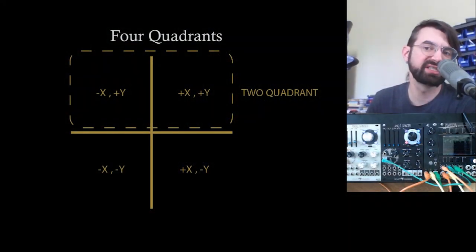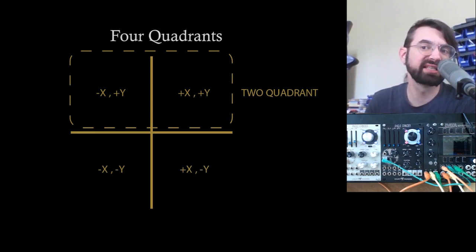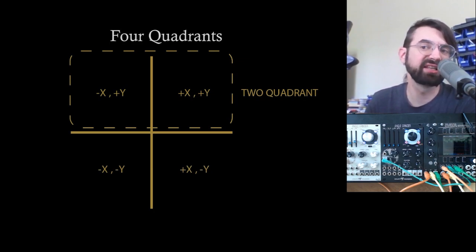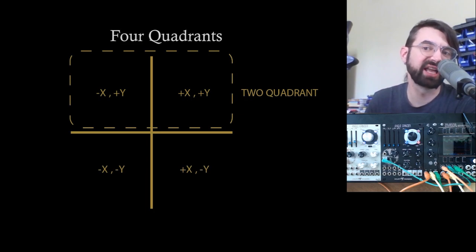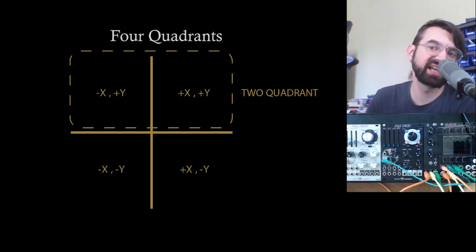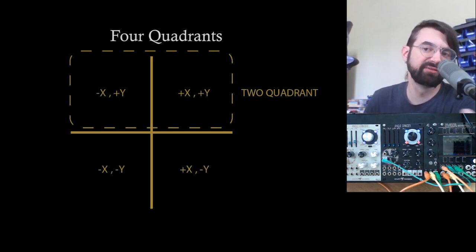A standard VCA is a two-quadrant multiplier — it multiplies two signals, x and y, against each other. The audio input can be both negative and positive, and the CV input can only be positive. One critical thing: if either one of these signals is zero, then the output should be zero. A four-quadrant multiplier allows both signals to go both positive and negative, which means if you multiply one signal by a negative signal, it will actually invert the signal.